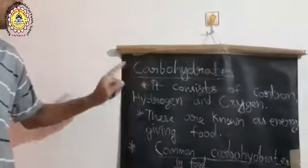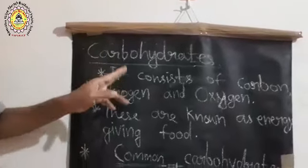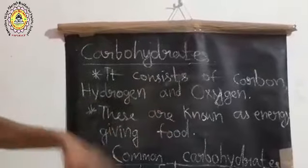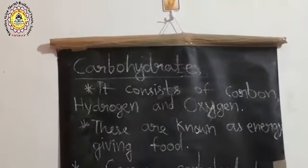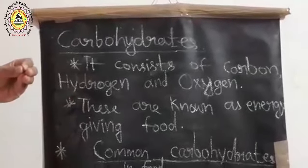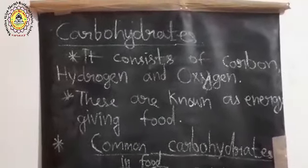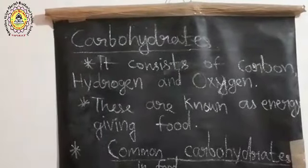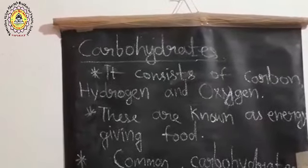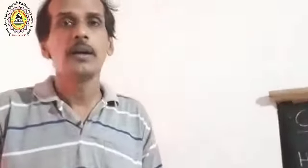First, let us discuss carbohydrates. Carbohydrates mainly consist of the chemicals carbon, hydrogen, and oxygen. They are mainly known as energy-giving food. When ingredients containing carbohydrates enter our stomach, they get oxidized during the respiration process — meaning oxygen is added to the food, it breaks down, and gives us energy.